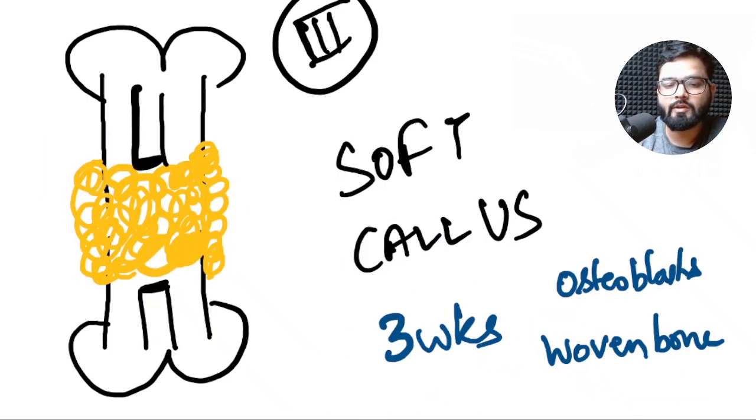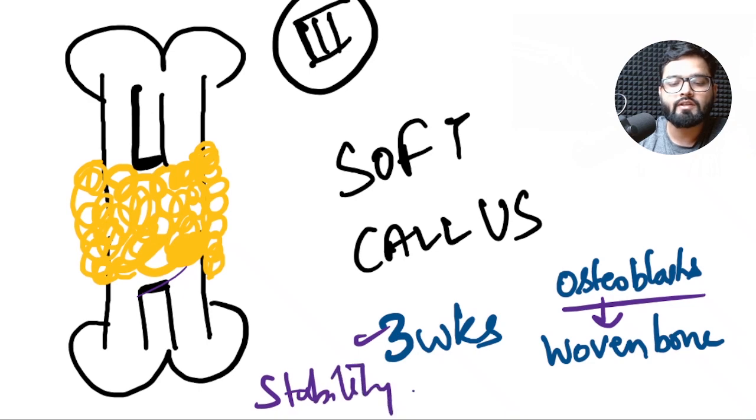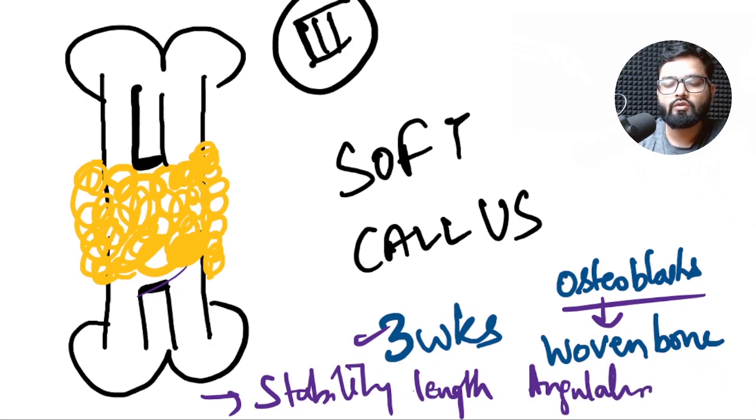Stage 3 is stage of soft callus formation which occurs at 3 weeks and the WBCs and macrophages are replaced by osteoblasts which lay down woven bone. At this stage there is some stability at the fracture site and this stability is provided only for the maintenance of the length of the bone but still angulation can occur so we should further protect the fracture even if the soft callus has formed.